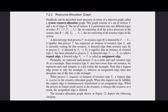When process Pi requests an instance of resource type Rj, a request edge is inserted in the resource allocation graph. When this request can be fulfilled, the request edge is instantaneously transformed into an assignment edge. When the process no longer needs access to the resource, it releases the resource and the assignment edge is deleted. The resource allocation graph shown in figure 7.2 depicts the following situation.